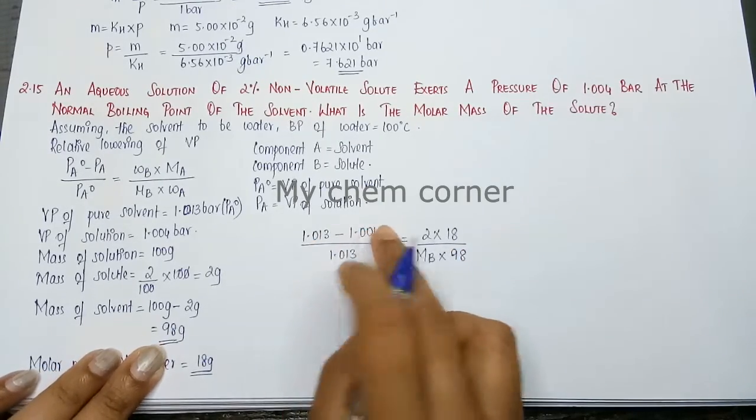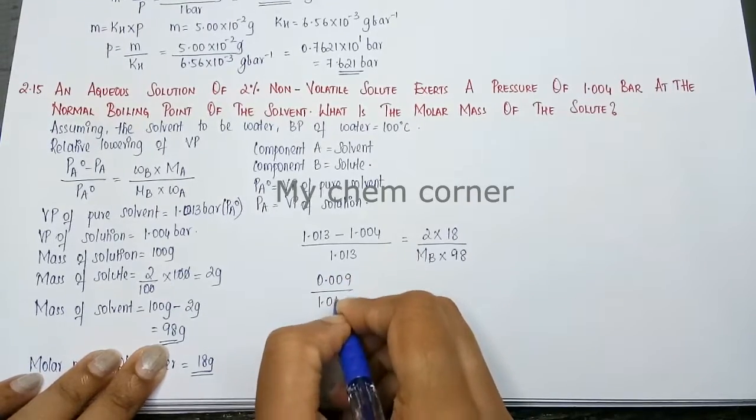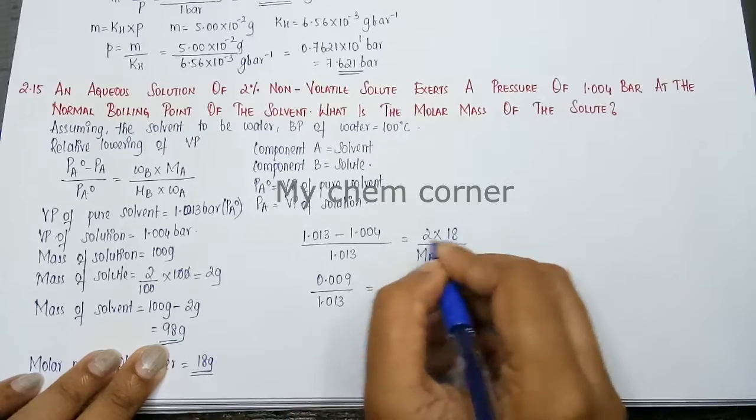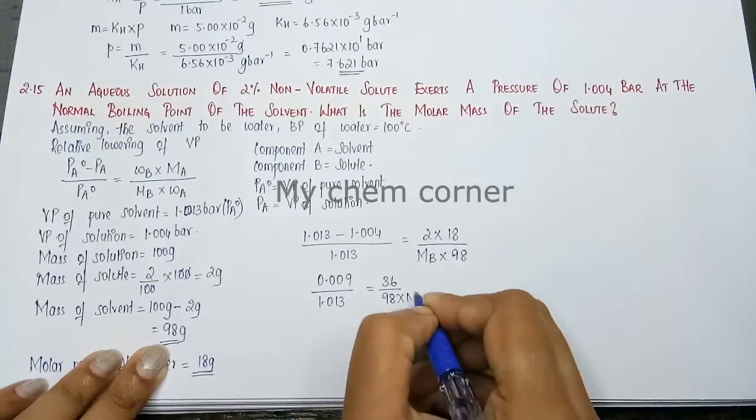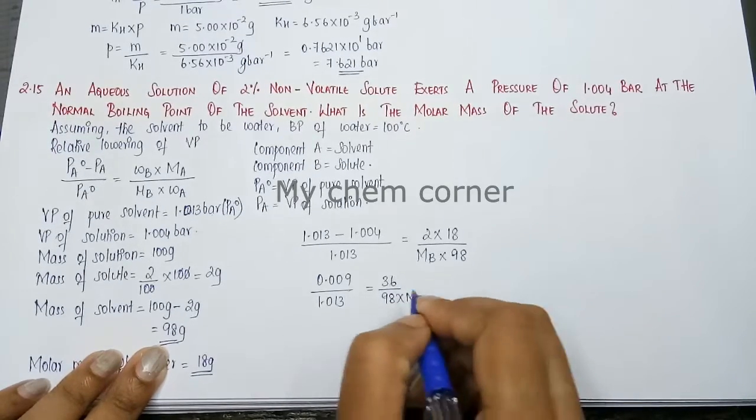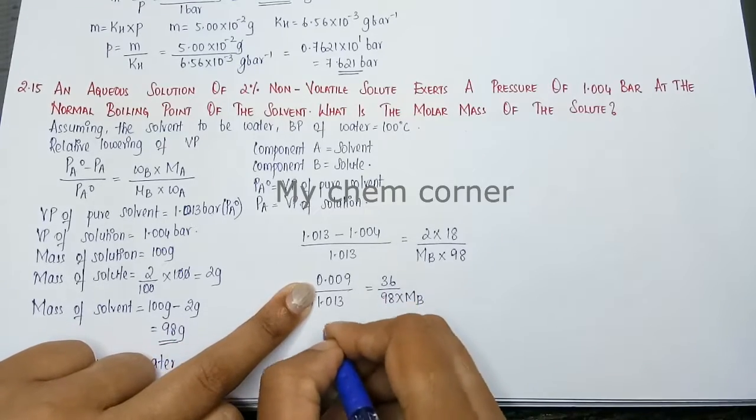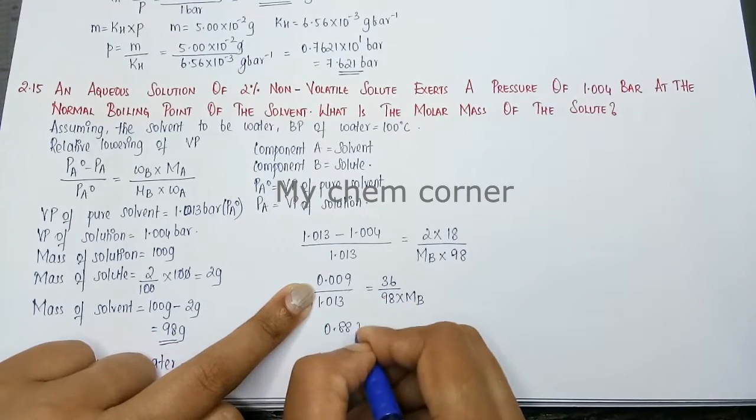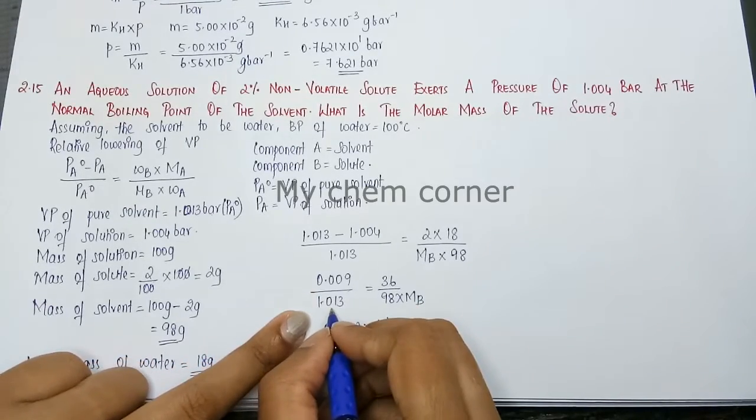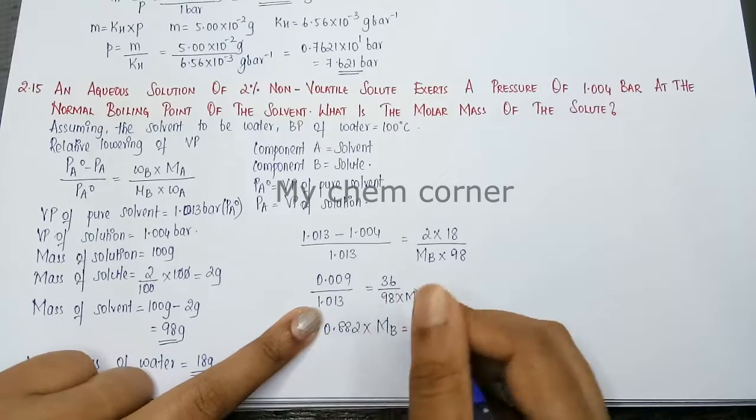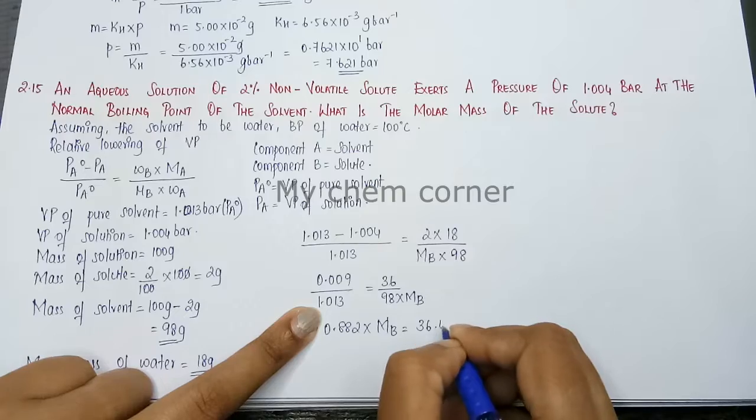This minus here you get 0.009 by 1.013 equals, these 2 when you multiply you get 36 divided by 98 into mb. Cross multiply them. When you cross multiply 98 into 0.009 will give 0.882 into mb equals 36 into 1.013 is 36.468.